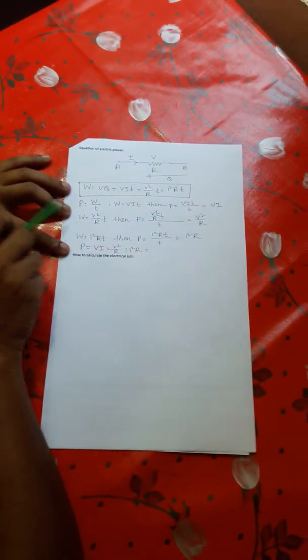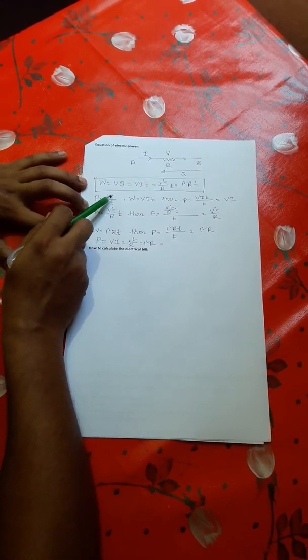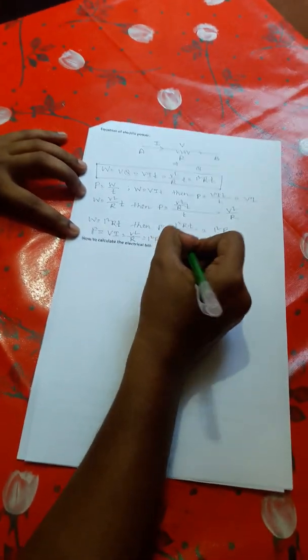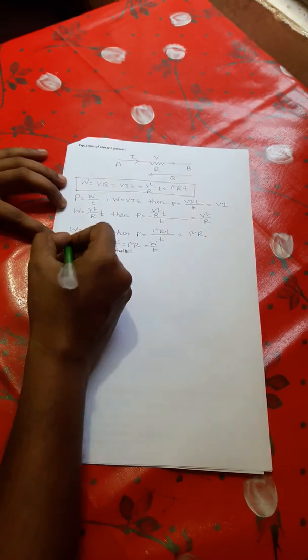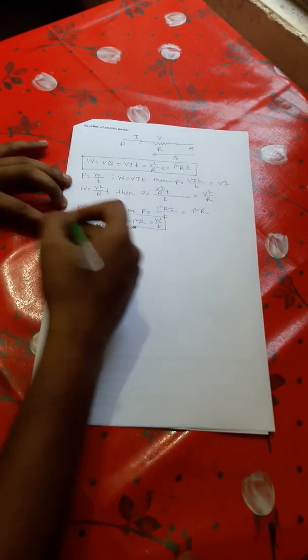So this is the complete equation of electrical power: P = V·I = V²/R = I²·R = W/T. In the next step, boys and girls, I need to know how can I calculate an electric bill.